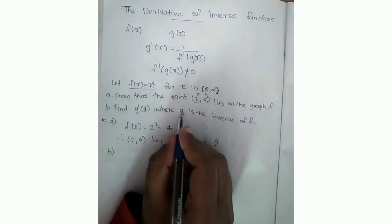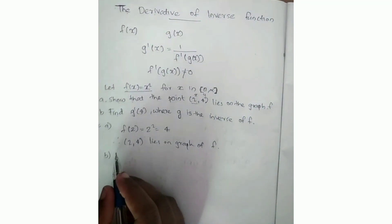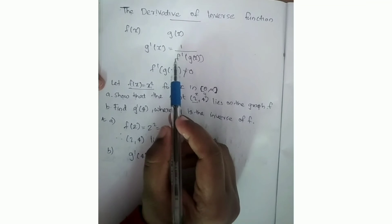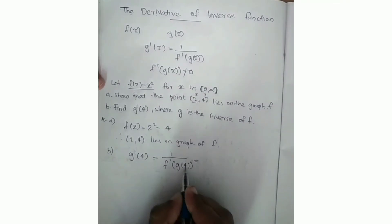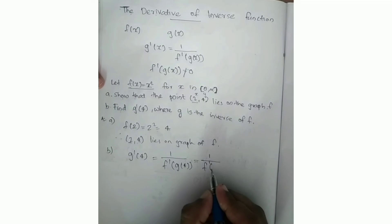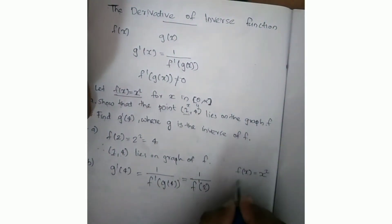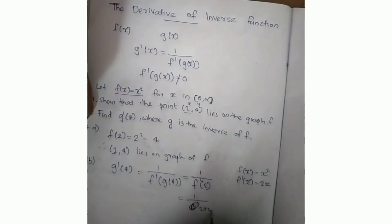Next question: find g prime of 4, where g is the inverse of f. We have to show that g prime of 4 equals 1 by 4. Using the derivative of inverse function formula, g prime of 4 equals 1 by f prime of g of 4. Since the point 2, 4 is on f, we get g prime of 4 equals 1 by 4.